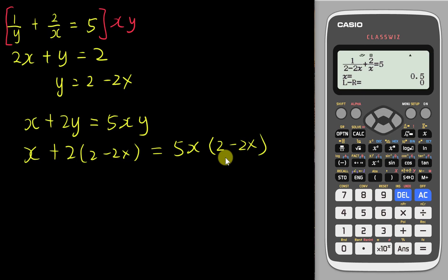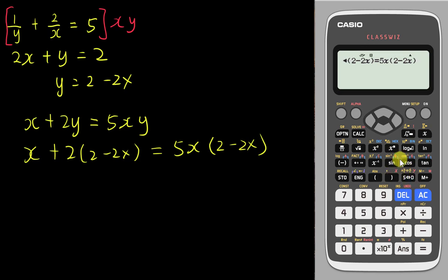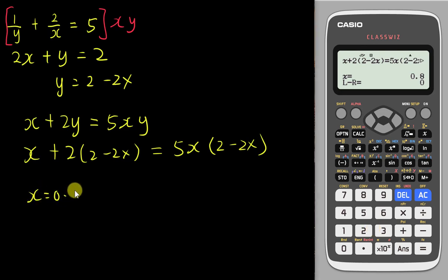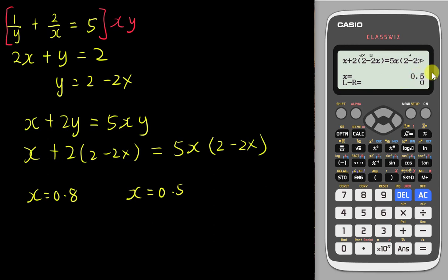Now type this into the calculator: x plus 2 bracket (2 minus 2x), then alpha-equal, then 5x bracket (2 minus 2x), close bracket. Press Shift Solve — the calculator shows the previous answer. Enter 100 and the first answer is x = 0.8. Press equal again, enter negative 100, and the second answer is x = 0.5. Notice that if you hadn't changed it to linear form first, the calculator would only have given 0.5. So whenever you see a reciprocal equation, always convert it to linear or quadratic form first.